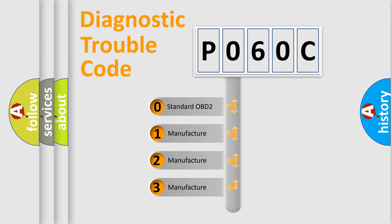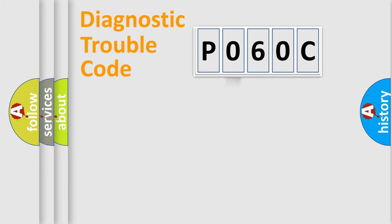If the second character is expressed as zero, it is a standardized error. In the case of numbers 1, 2, or 3, it is a manufacturer-specific expression of the car-specific error.